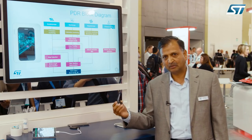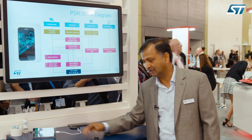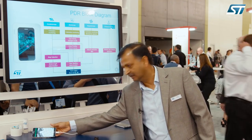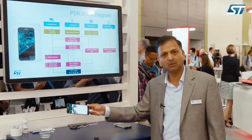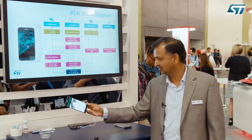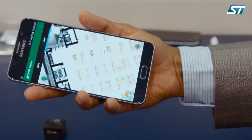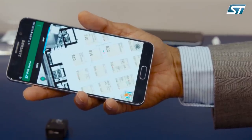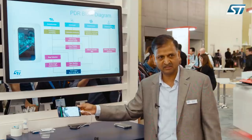The pedestrian dead reckoning algorithms execute on the STM32 and the output is displayed on a mobile phone, where you can see our position here on this device. The map that you see here is for Sensor Expo.